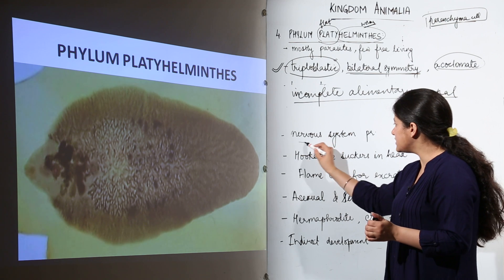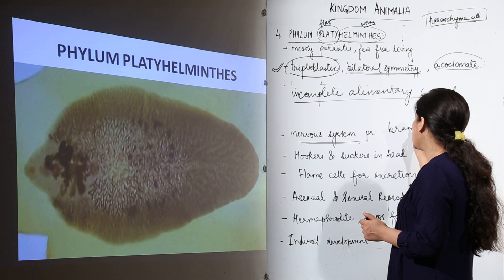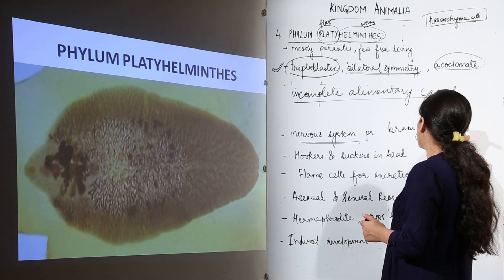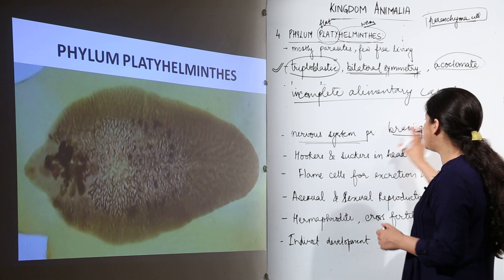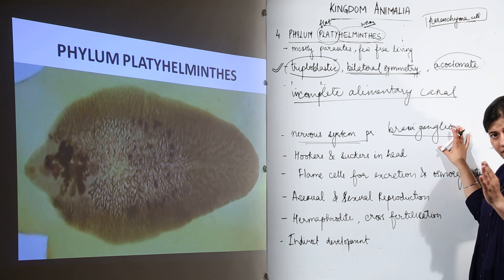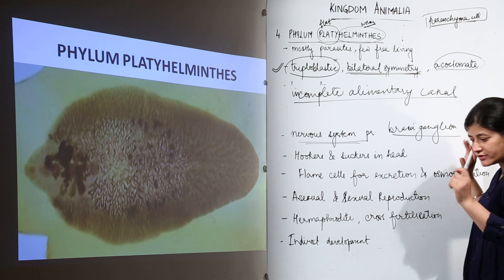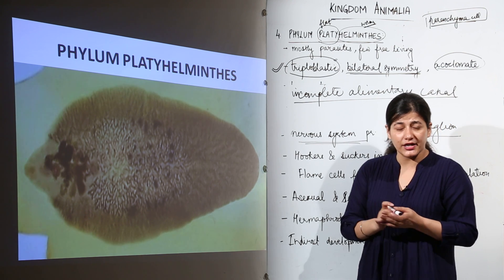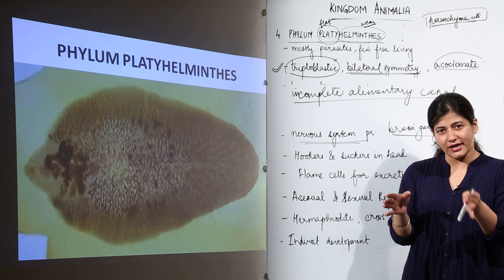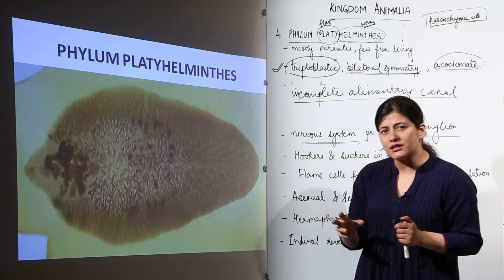They have a nervous system with a superior brain ganglion — a clustering of neurons — present anteriorly in the head area. From there, the ventral nerve cord originates. There are two nerve cords running parallel to each other, just like a railway track. The nervous system is very simple and not advanced.